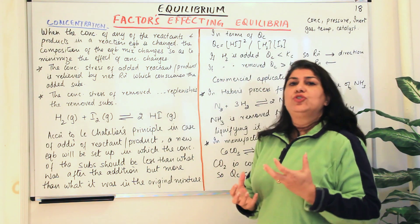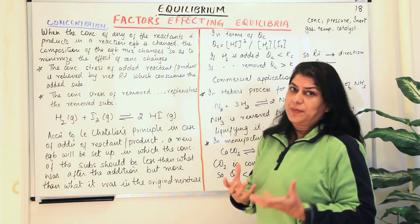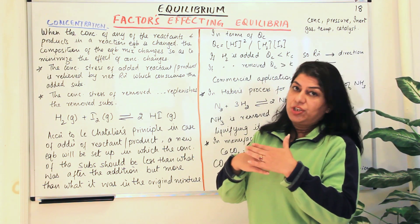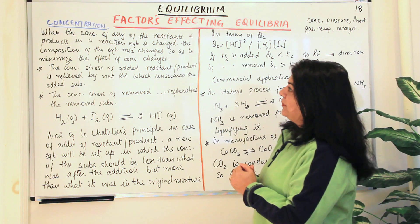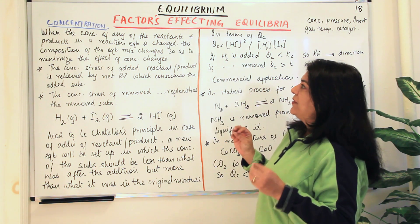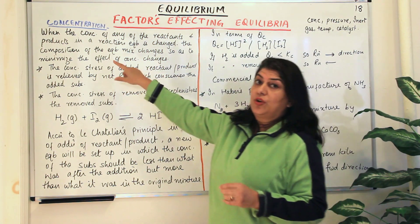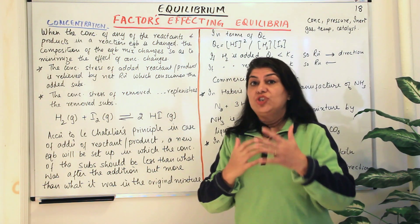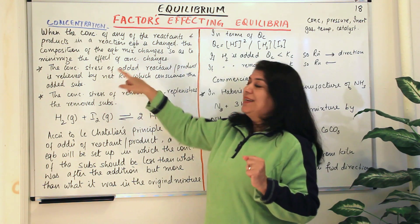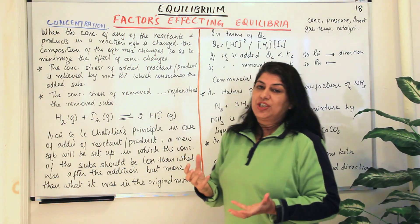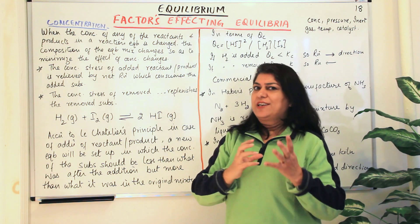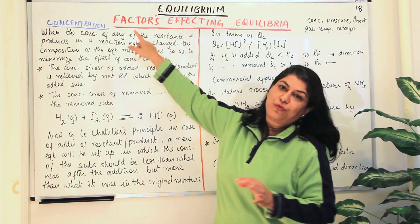So what happens when you change the concentration of a reactant or a product when the reaction is already in equilibrium? When the concentration of any of the reactants or products is changed, the composition of the equilibrium mixture also changes so as to minimize the effect of that concentration change. In this statement, we have simply applied Le Chatelier's principle in terms of concentration.